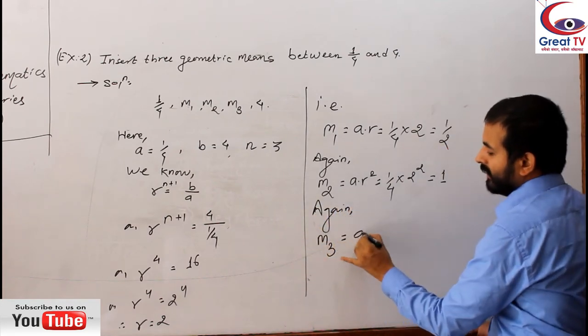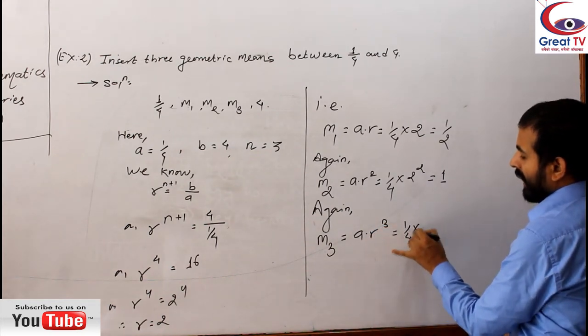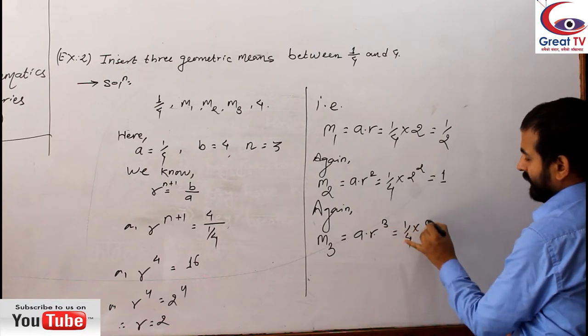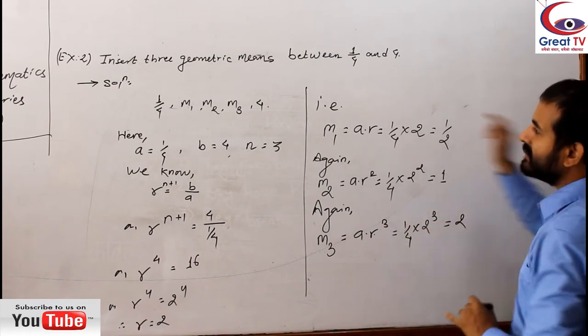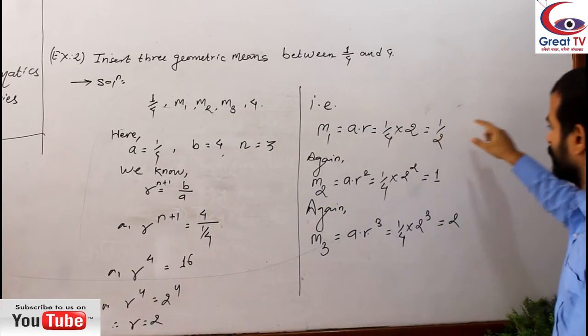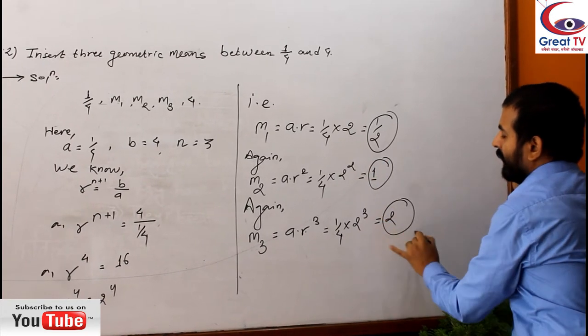Again, M3 equals to A·R³. And that is A means 1/4, R³ means 2 to power 3. It will be 8, so 8 divided by 4 is 2. So this is 2, my dear students. So we have successfully calculated the 3 means inside 1/4 and 4.